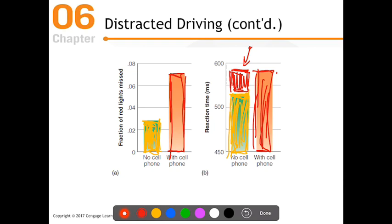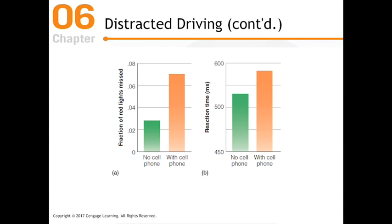Even hands-free headsets are distracting — people are much more likely to get into an accident or a near miss. While car technology tries to reduce physical distraction with Bluetooth and voice commands, the problem isn't just having your hands on the wheel or pressing buttons. It's the fact that you're simply distracted — that your full attention isn't on the road in front of you.